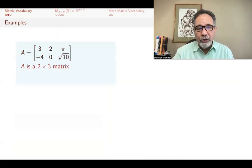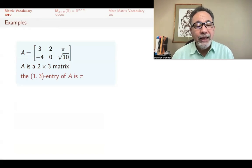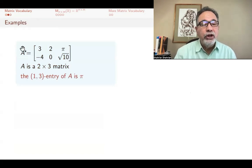Here's, for example, a 2 by 3 matrix, and its 1-3 entry is π. The entry in row 1, column 3 is π.